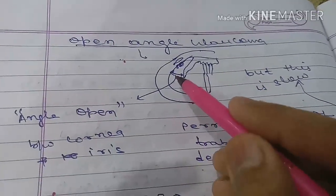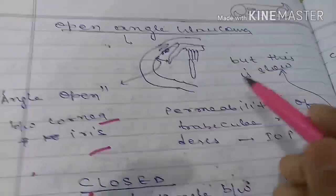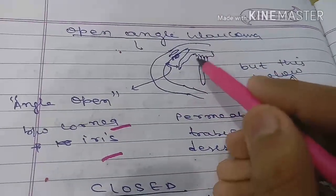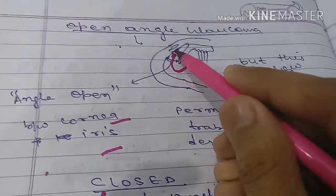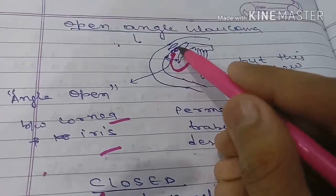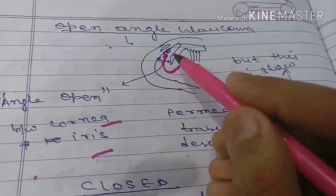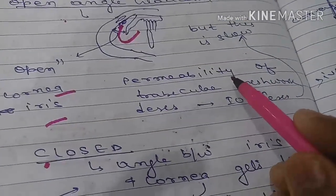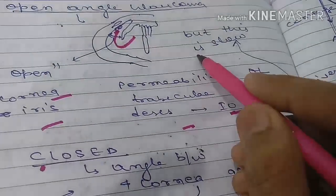In open angle glaucoma, the angle is open between cornea and iris, but drainage is somewhat poor. Aqueous humor will go to trabecular meshwork, but the trabecular meshwork is somewhat blocked. The permeability of trabecular meshwork decreases and that will increase IOP because the drainage is very slow.